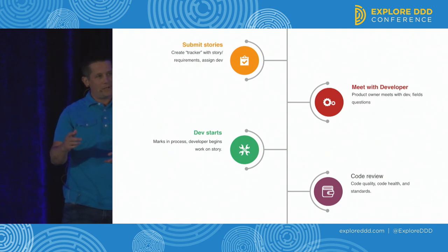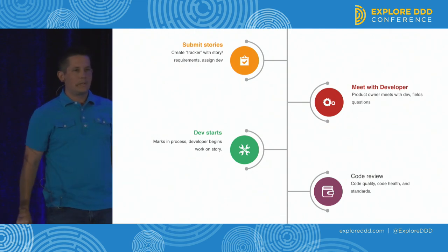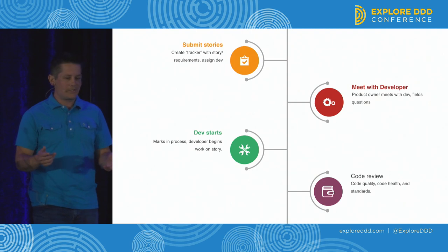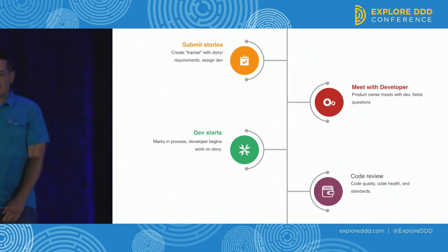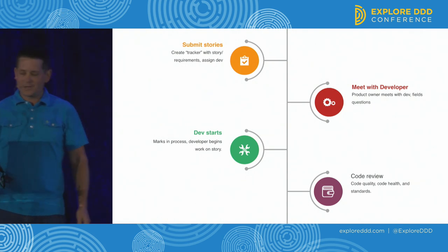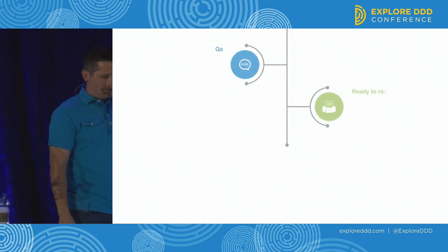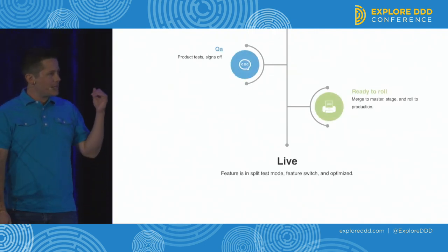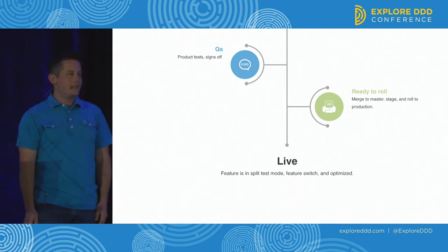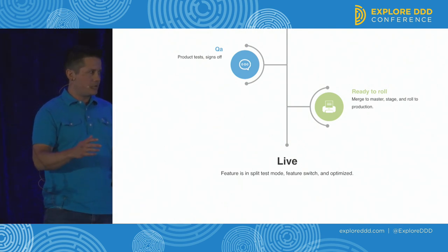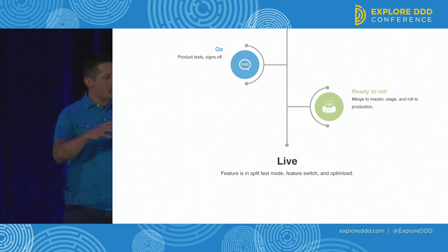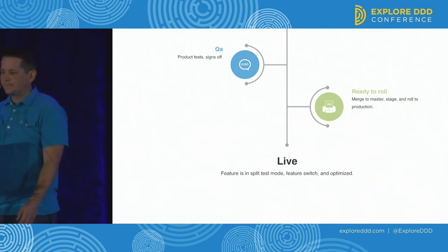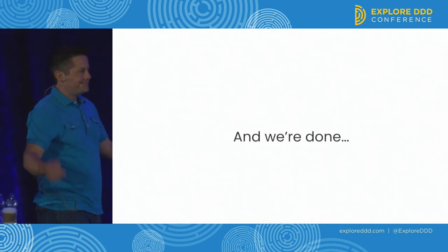The product team would submit their stories into our internal system called Tracker - put in the requirements, assign it to the developer. Since it's a small office, they'd walk over and talk to the developer one-on-one: here's what we want to do, here's what we want to get out of this. The developer would have some questions, and shortly after, they'd just start working. At some point they'd be done and do a code review, then QA, the product team tests and signs off, it goes to production in a split test mode with a feature switch, and once in production we start to optimize. So we're done, right? Everything's perfect.